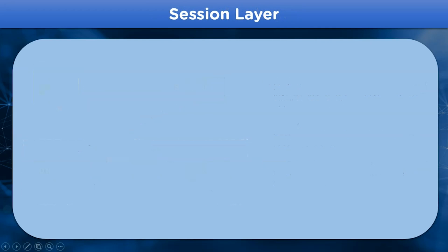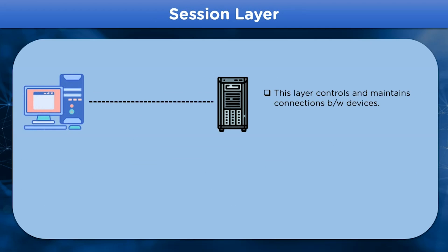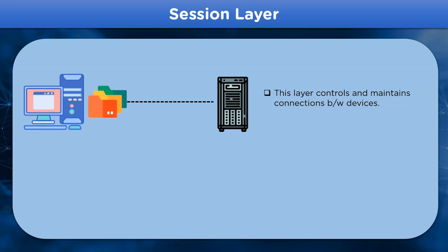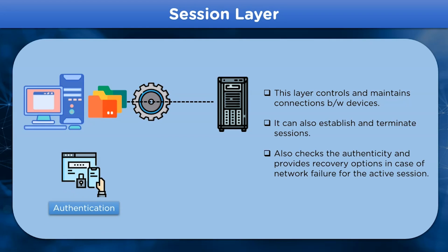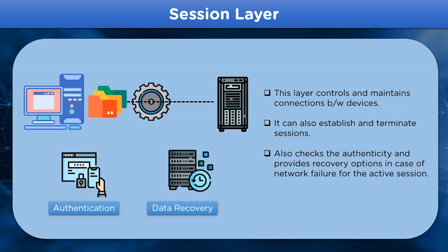The next layer in the OSI model is the Session layer. In this layer, the communication channel between two different devices is established. The network devices are individually known as sessions, and the data transferred is done over these session channels. The Session layer establishes and terminates these sessions in case of an error or unforeseen event. This layer is also responsible for authentication checks regarding the data being transferred and provides data recovery options in case an error occurs.